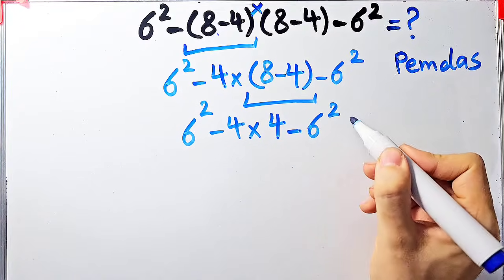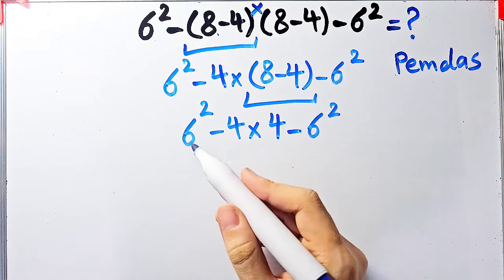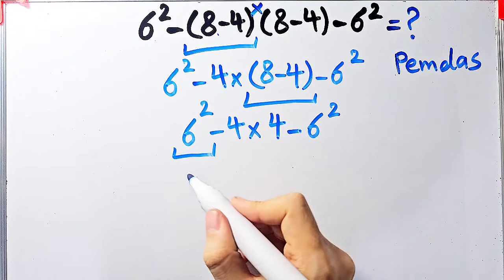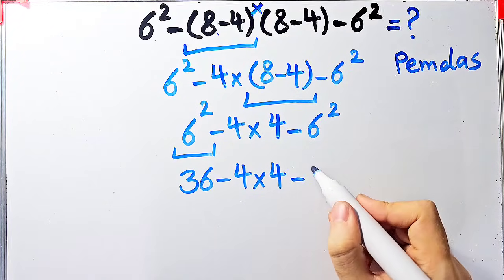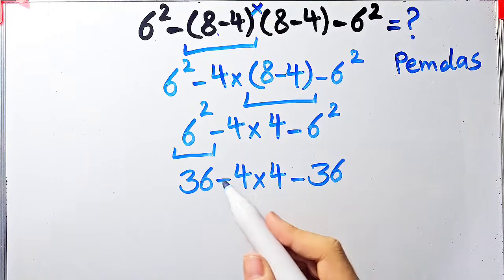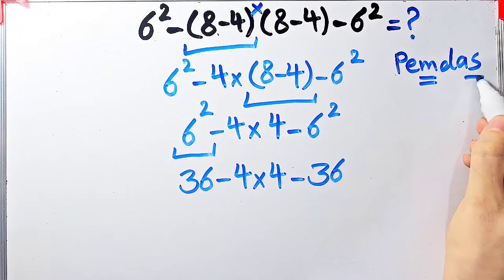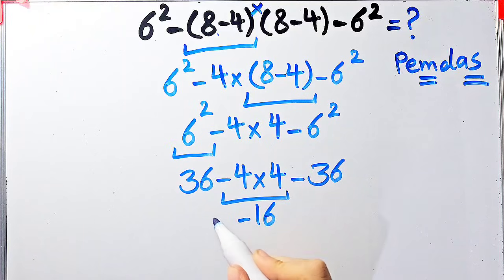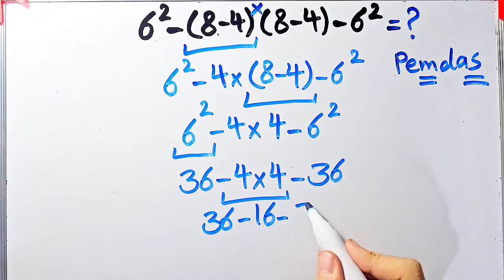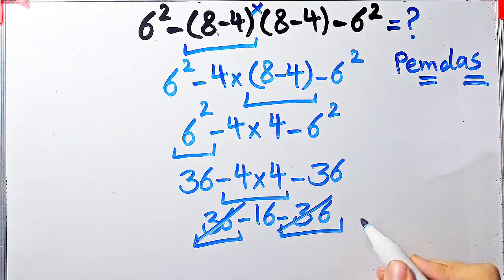Now we have exponents, subtraction, and multiplication. First we simplify the exponents: 6 to the power of 2 equals 36. Now we have 36 minus 4 times 4, minus 36. We do the multiplication first because it has higher priority than subtraction: negative 4 times 4 equals negative 16. Now we have 36 minus 16, then minus 36.